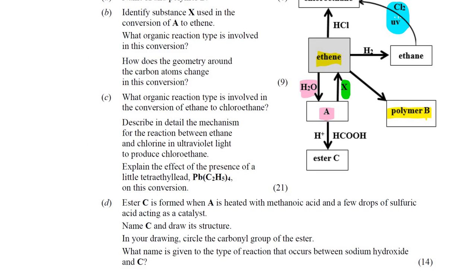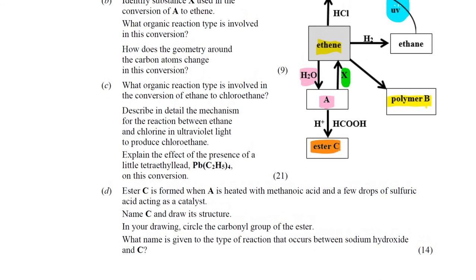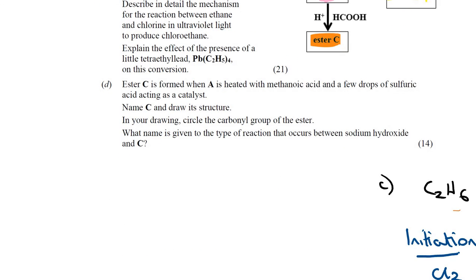Ester C is formed when heated with methanoic acid and a few drops of sulfuric acid acting as a catalyst. Name C and draw its structure. We can just do this here. We have ethanol is react with methanoic acid.